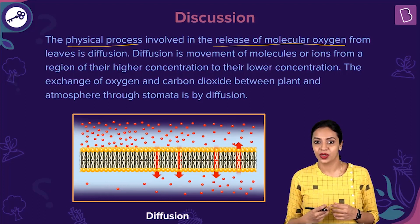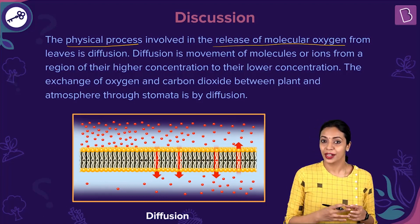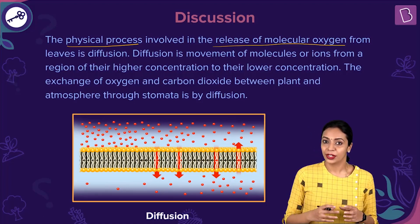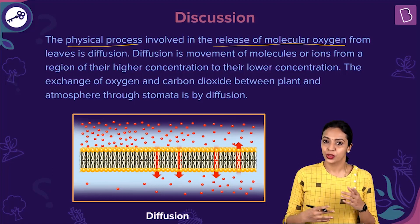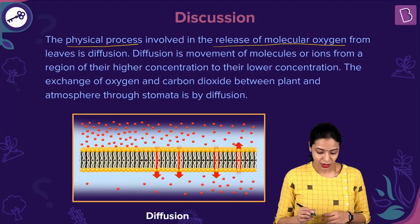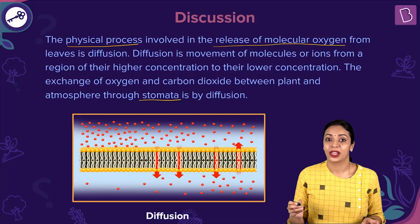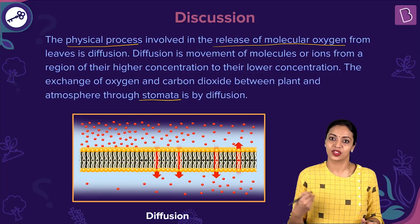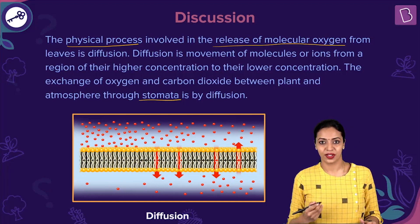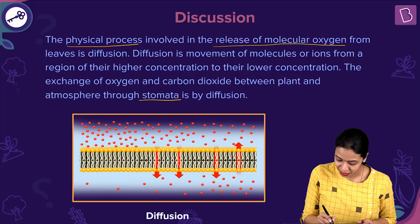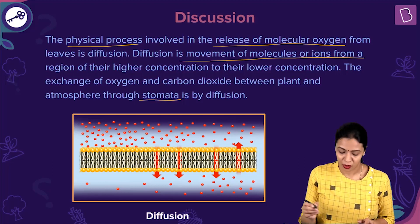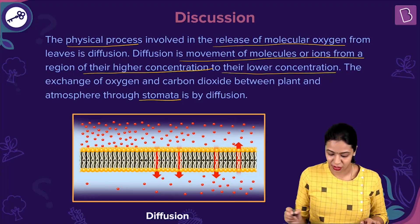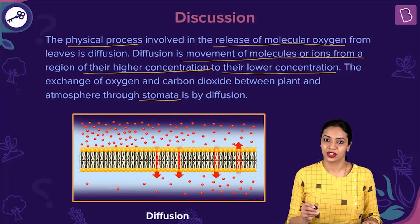Plants take in carbon dioxide to perform photosynthesis; the end product of photosynthesis is oxygen, and it is released outside into the atmosphere. Carbon dioxide and oxygen get into and out of the plant by the help of stomata, which are present in young stems and on leaves. The process involved in this gaseous transport between the plant and the atmosphere is diffusion — movement of molecules or ions from a region of higher concentration to their lower concentration. This is the correct answer.